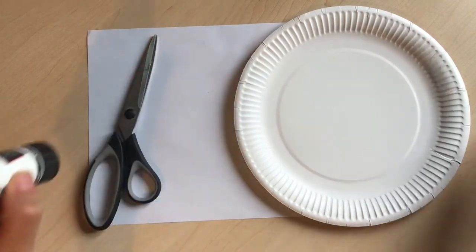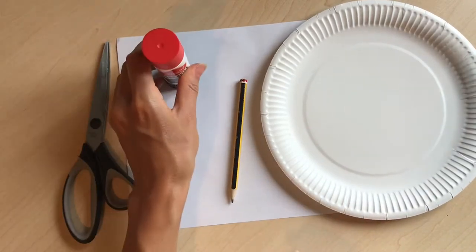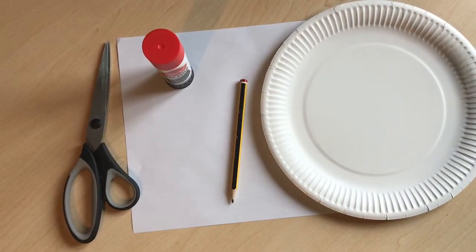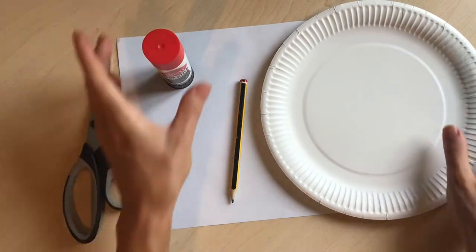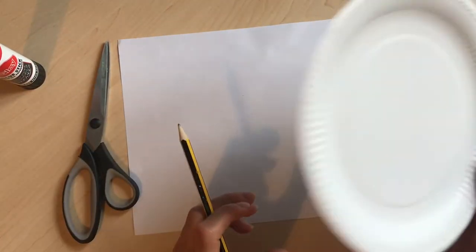You will need a paper plate, some scissors, a piece of paper, pencil, some glue or sellotape and some colors. If you don't have a paper plate you could just draw around a circle on a piece of paper or a piece of card.